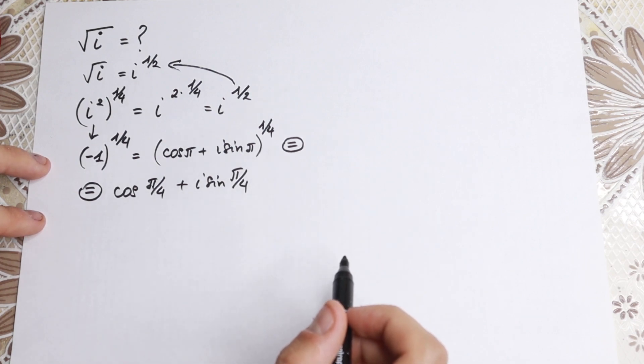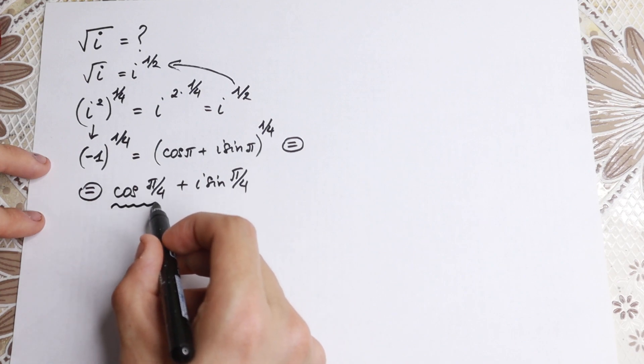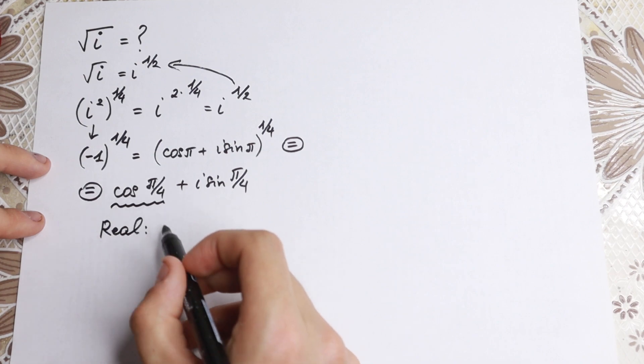So right now we can easily find our real and imaginary parts. Take a look closely. The value of the real part will be cosine π over four, which equals one over the square root of two.